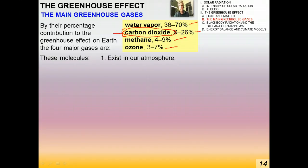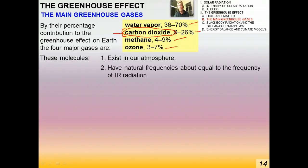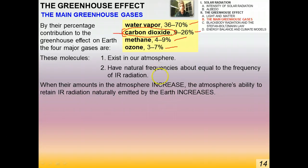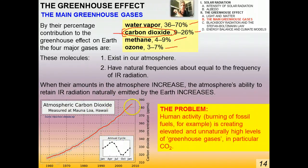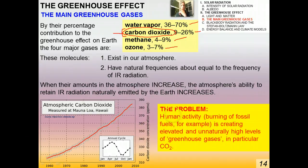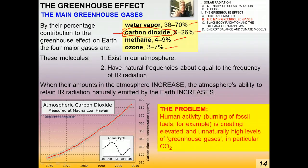All of these molecules exist naturally in our atmosphere, and they have natural frequencies about equal to the frequency of infrared radiation. So when their amounts in the atmosphere increase, the atmosphere's ability to retain infrared radiation naturally emitted by the Earth increases, and therefore the temperature of our atmosphere increases. Here's a graph of atmospheric carbon dioxide measured at Mauna Loa, Hawaii. There is no denying that the amount of CO2 in the atmosphere is at all-time record high levels and shows no signs of decreasing its rate of increase.